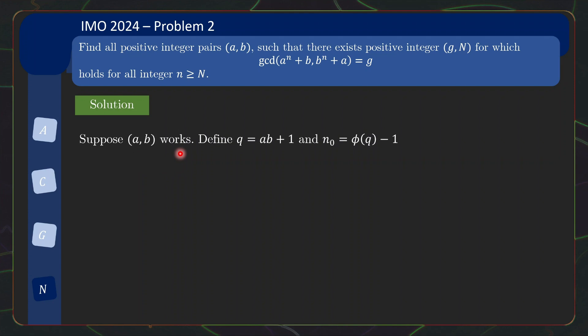Let us suppose (a, b) works, so (a, b) is some valid solution to this problem. Let us define q = ab + 1, and n_0 = φ(q) - 1.